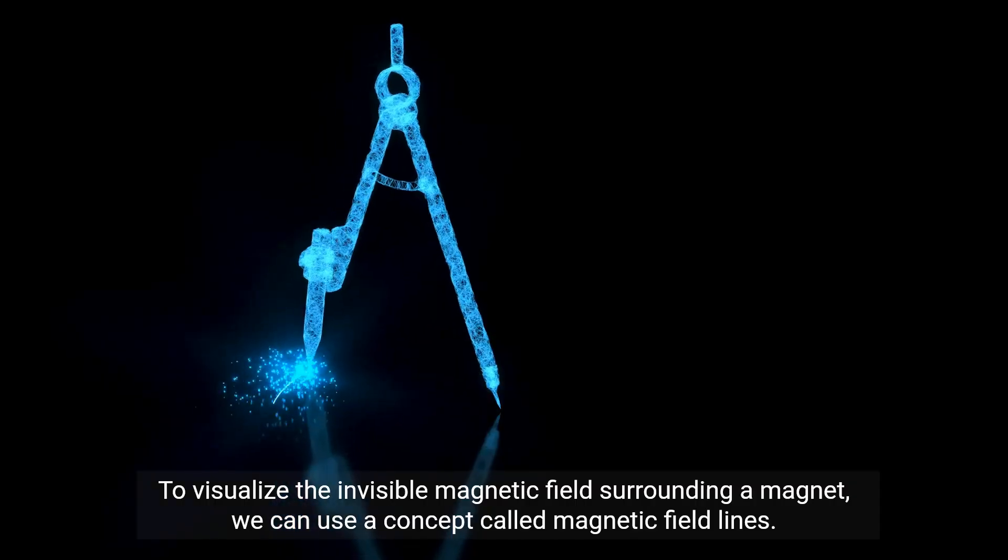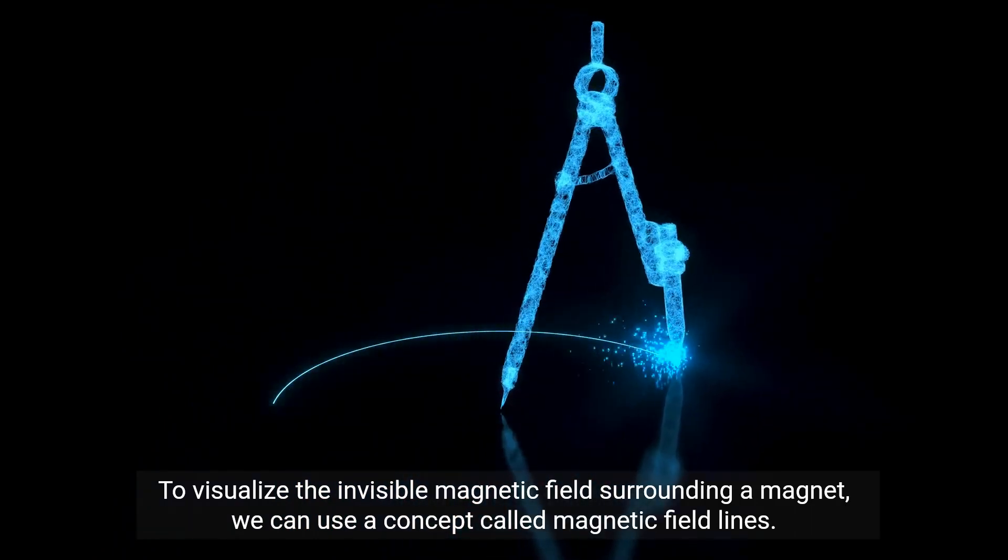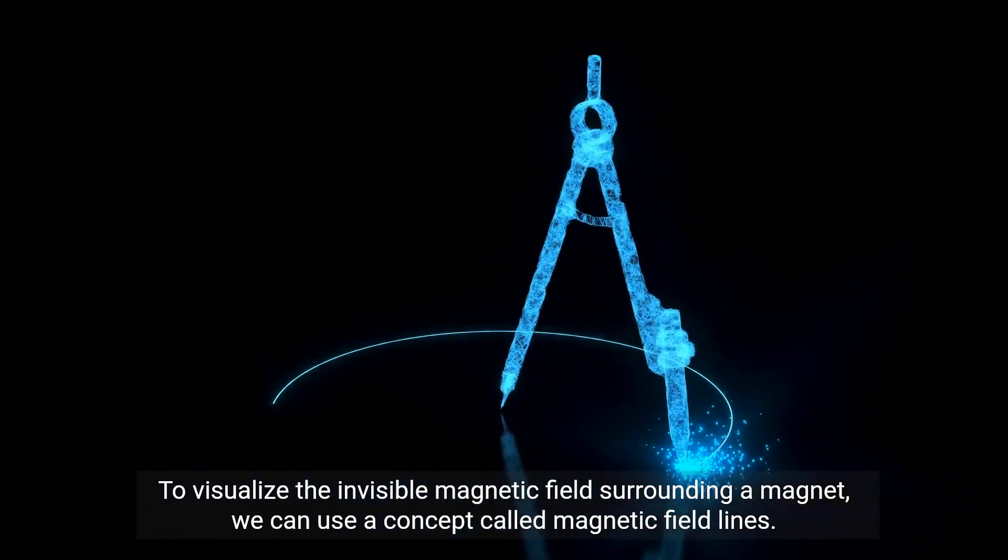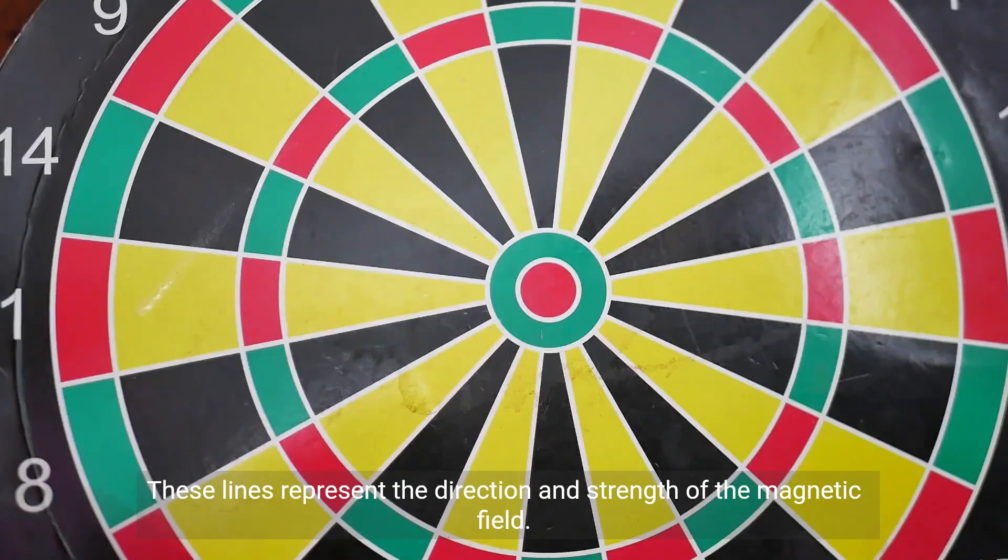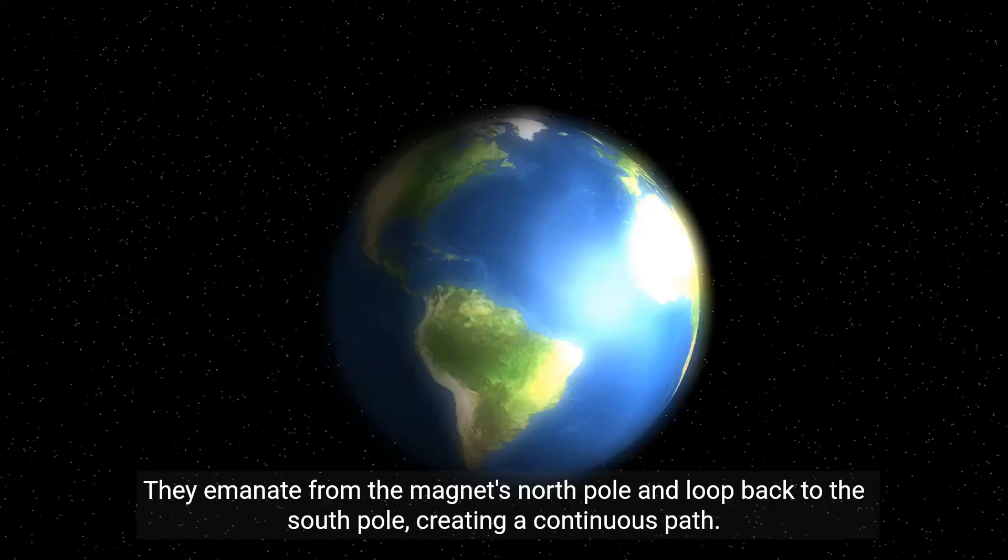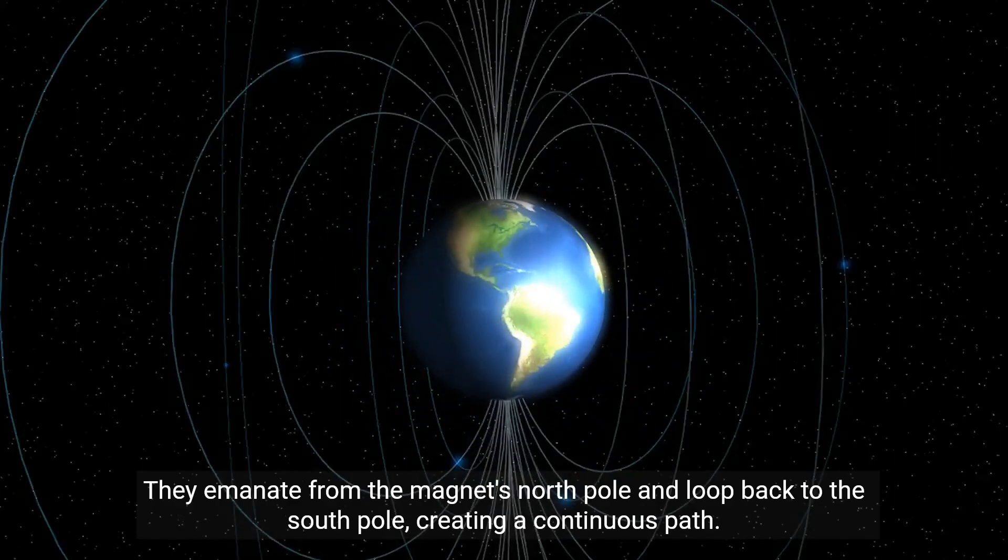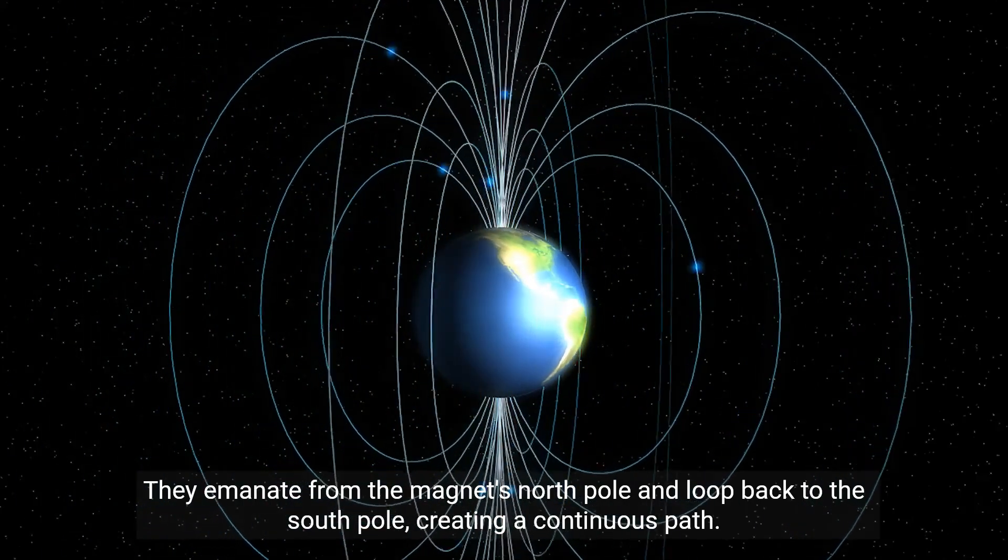To visualize the invisible magnetic field surrounding a magnet, we can use a concept called magnetic field lines. These lines represent the direction and strength of the magnetic field. They emanate from the magnet's north pole and loop back to the south pole, creating a continuous path.